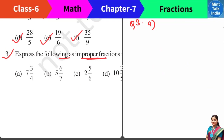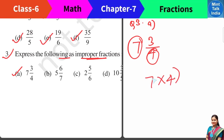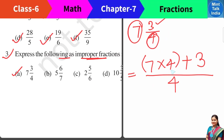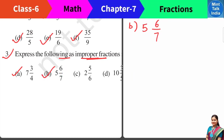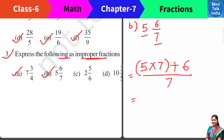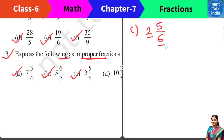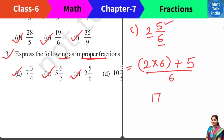Last question, number 3: Express the following as improper fractions. We have a mixed fraction — 7 whole and fractional part 3 by 4. We multiply the whole number and the denominator: 7 times 4 is 28, then add to the numerator 3, so 28 plus 3 is 31, and denominator stays 4. Answer: 31 by 4. Next is B, 5 and 6 by 7. Multiply 5 by 7 is 35, plus 6 is 41, denominator 7. Answer: 41 by 7. Next is 2 and 5 by 6 — 2 times 6 is 12, plus 5 is 17. Answer: 17 by 6.